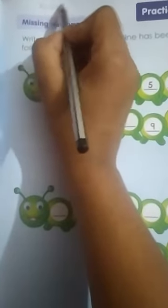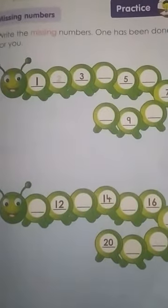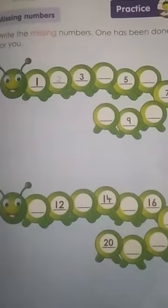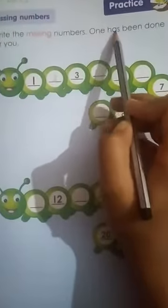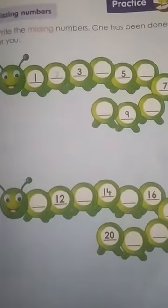Okay. Missing numbers. First write here date and classwork. Date and classwork. Now kids, starter class. Write the missing numbers. One has been done for you. Okay. Missing numbers, those numbers we have to write them. Okay. One has been done for you.